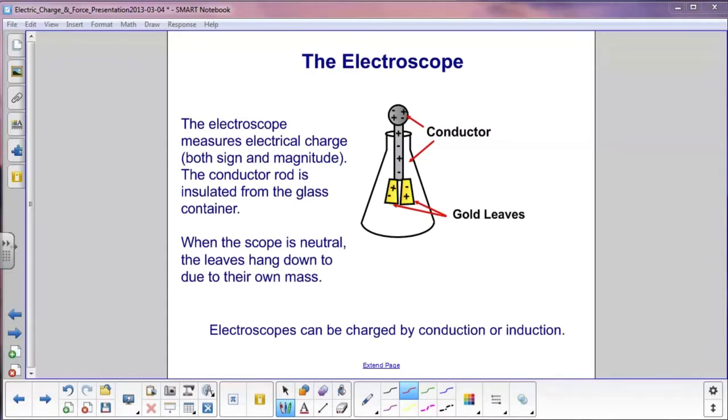Electroscopes come in various shapes and sizes. This is a fairly common one. We start with a glass container here, and inside of it we have a metal conductor.